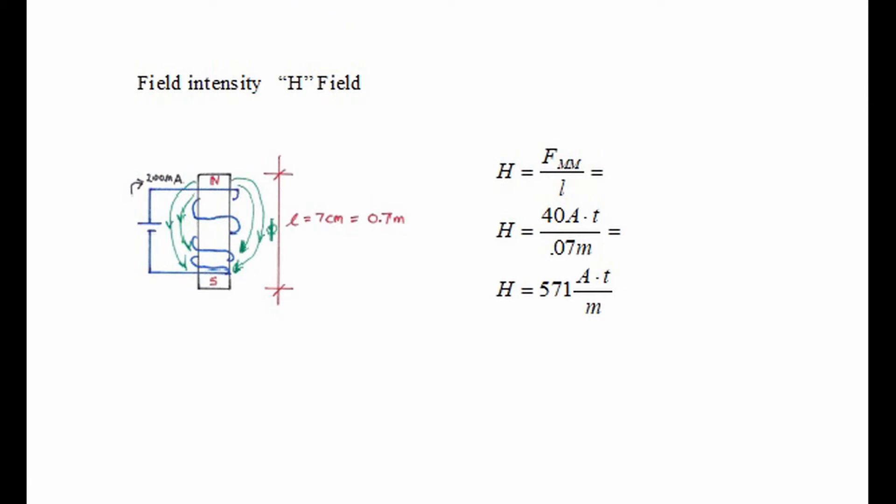Let's say that our iron is 7 centimeters long. In dealing with these calculations we always have to convert to meters, so in this case the iron is 0.07 meters in length.